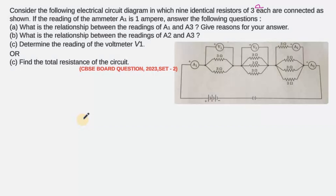If the reading of ammeter A1 is one ampere, answer the following questions: the relationship between A1 and A3, A2 and A3, the reading of voltmeter V1, and the total resistance of the circuit. There is a mixed circuit overall whose resistance we have to find out.